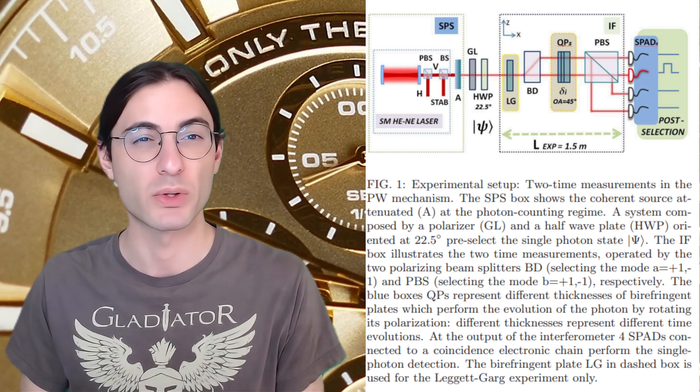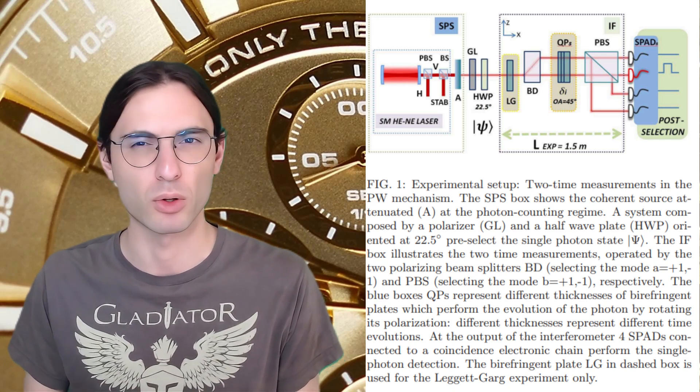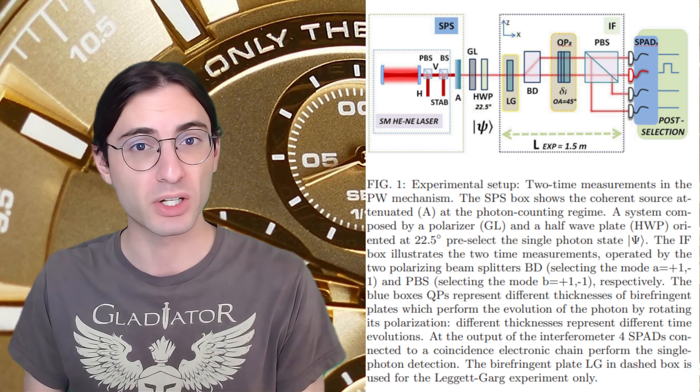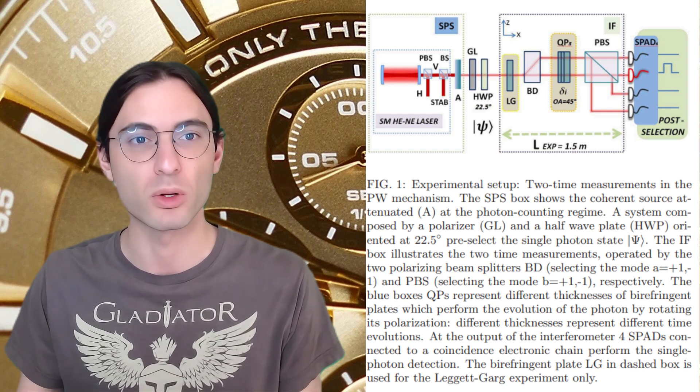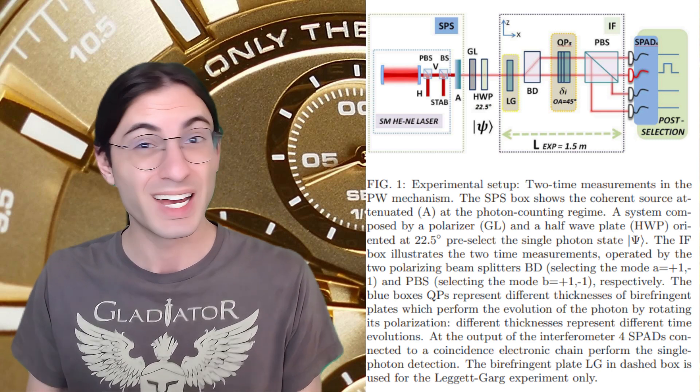First, they polarized a photon so that it was in a superposition of two distinct polarization states. And then, using a polarizing beam splitter, split the superposition so one polarization was at one vertical position, and the other was at another.